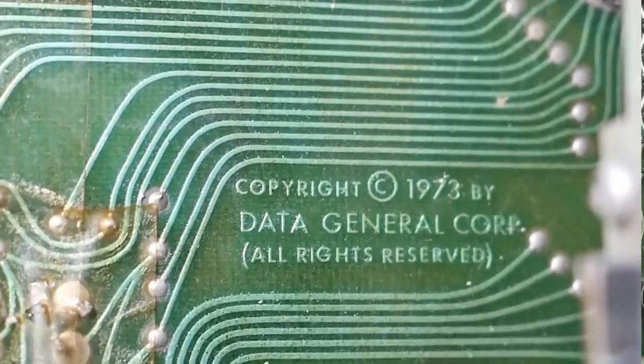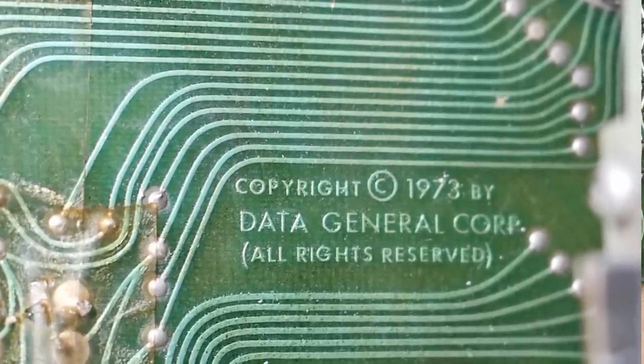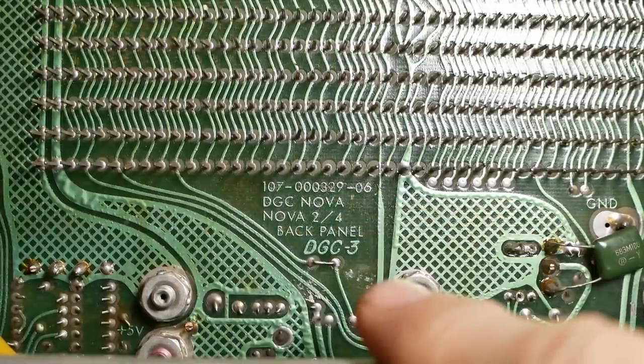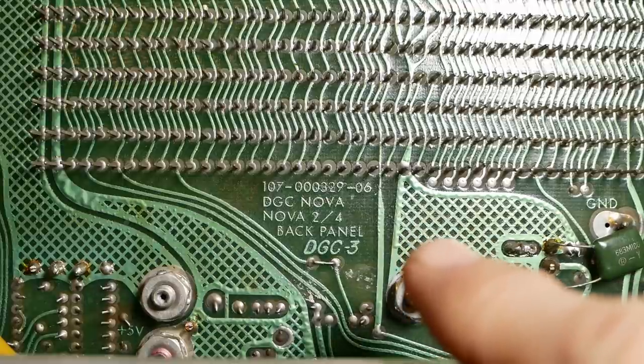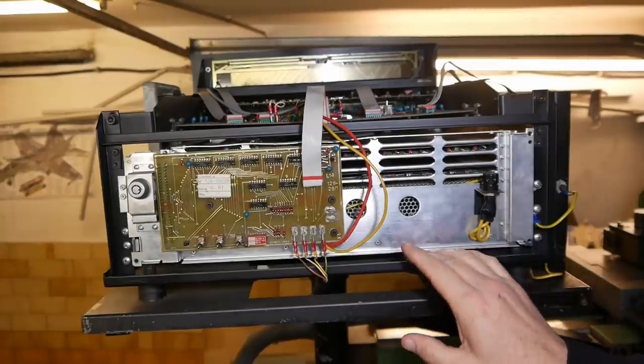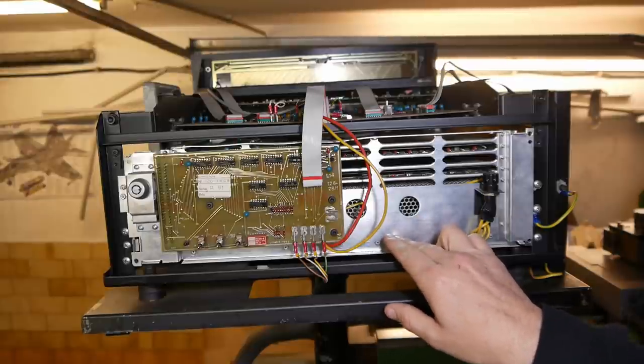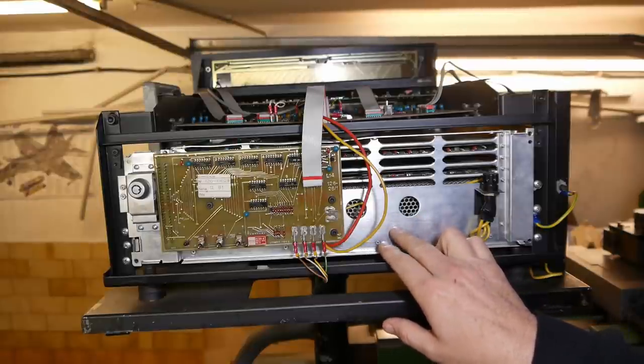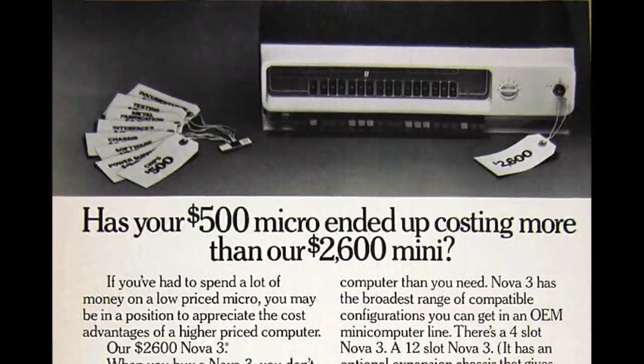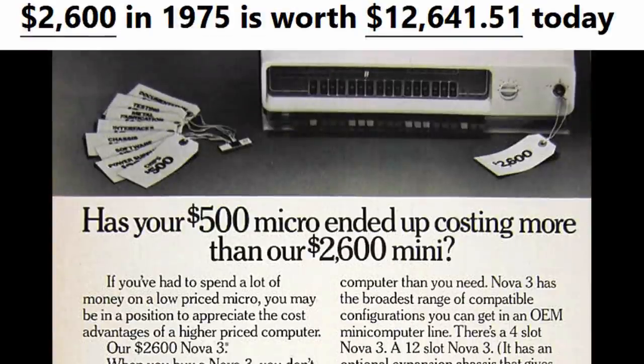So the controller is powered by a Data General Corporation Nova. The Data General Novas were pretty much the first of the 16-bit mini computers. According to the wiki, Data General brought this Nova series onto the market in 1969. By the mid to late 70s the price had probably come down a bit, but it's still an awful lot of money.